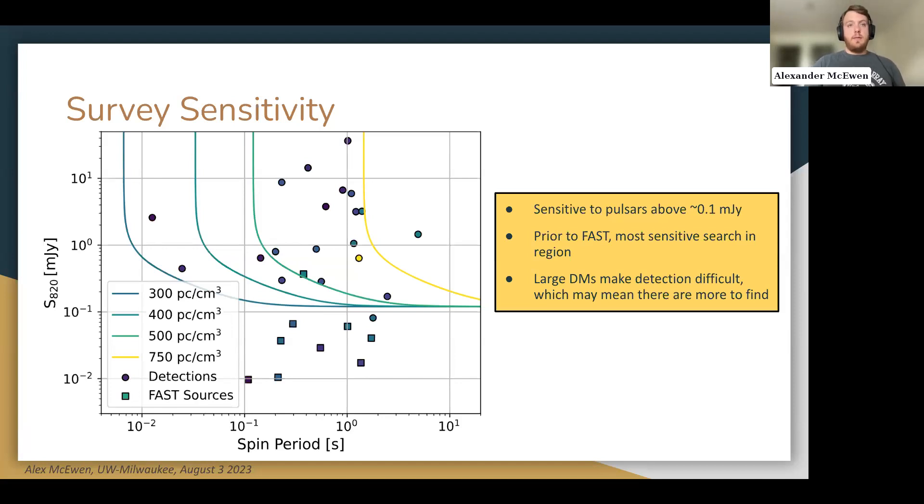I have another question here. Do you rule out that the J2035 companion is not a main sequence star? We do mostly because of the optical search that I mentioned earlier. So main sequence stars, especially for a source that's relatively close by along this line of sight would be, should be detectable in optical. So yeah, I think we would have seen it if it was a main sequence star. That's a good question though.